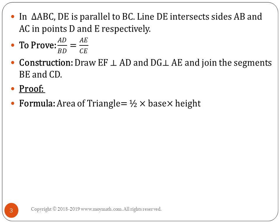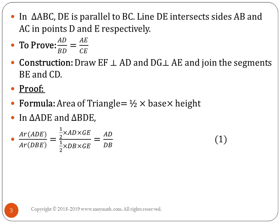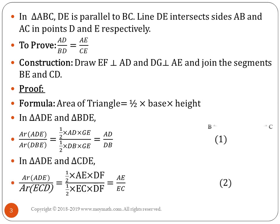Before getting into the proof, you need to know that the area of a triangle is half times base times height. Choosing triangles ADE and BDE: area of triangle ADE = (1/2) × base AD × height GE, and area of triangle BDE = (1/2) × base DB × height GE. Since GE and the half cancel on both sides, the ratio of their areas gives AD/DB.